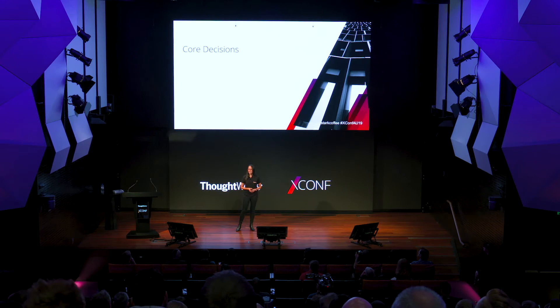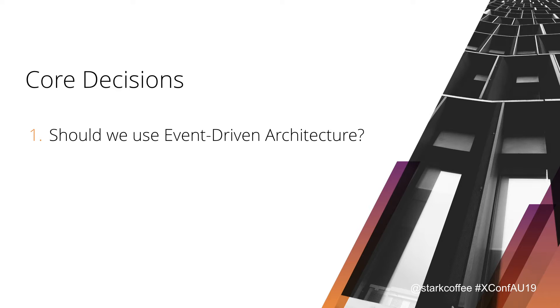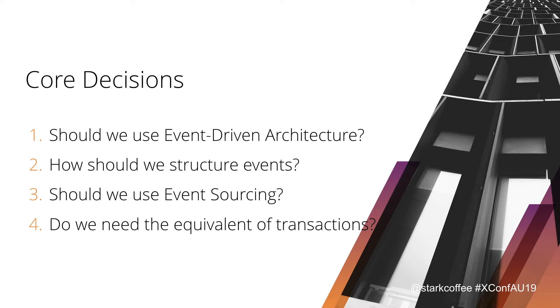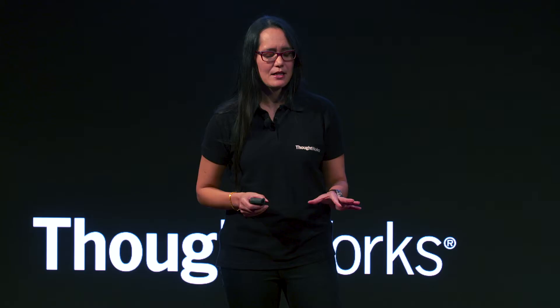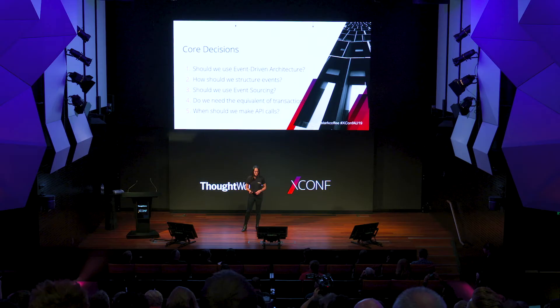The agenda of the talk covers five core decisions: one, should we use event-driven architecture? Two, how should we structure events? Three, should we use event sourcing? Four, do we need the equivalent of transactions? And five, when should we make API calls? There's a lot of detail around this stuff — I'm just going to give a high-level introduction of what kind of principles and choices you might need to make.